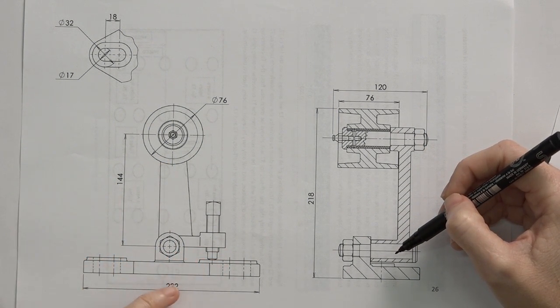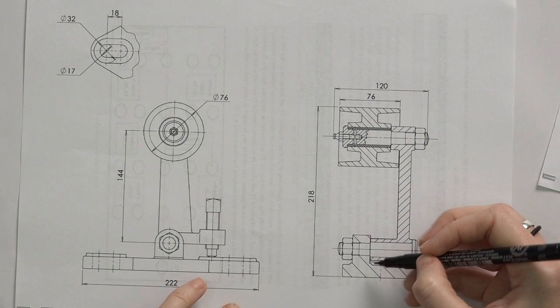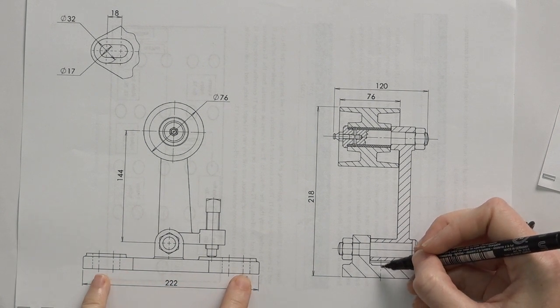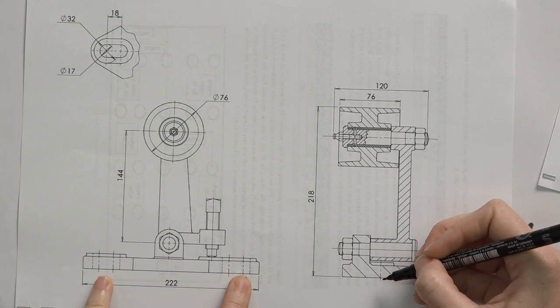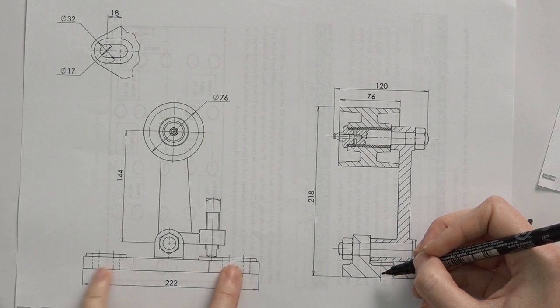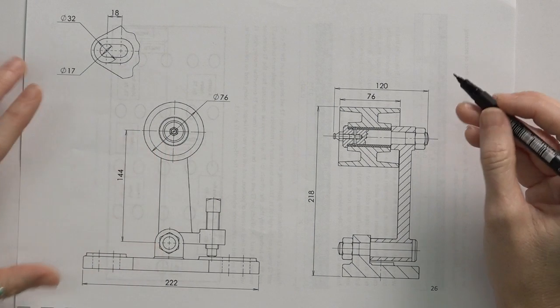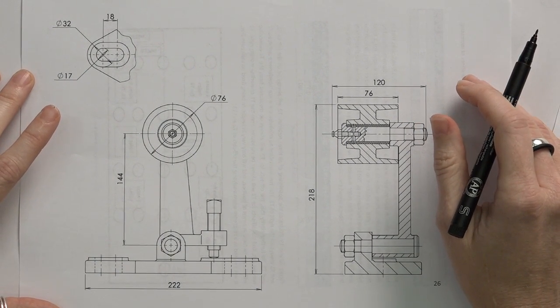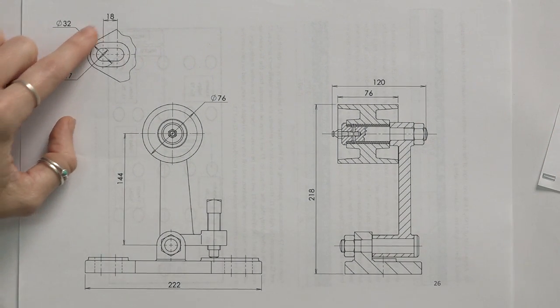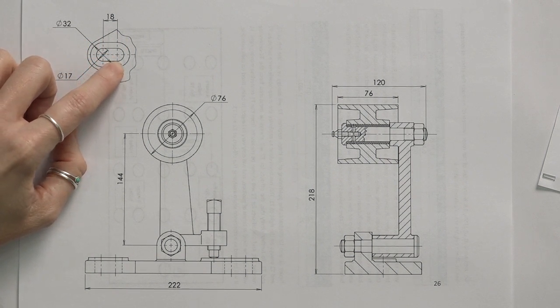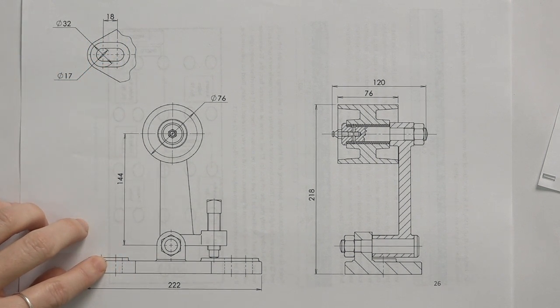So a couple of common mistakes to remember here. The first being to make sure that you have the center lines on both views for every circular component. So here we have these two, we have this, we have that, and the same here at the top. So make sure you have the center lines for all the views.